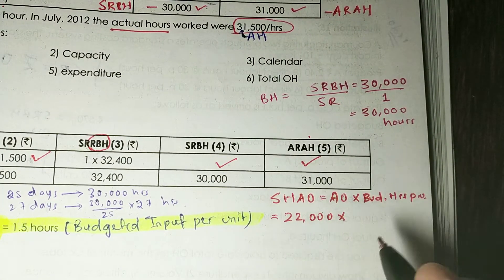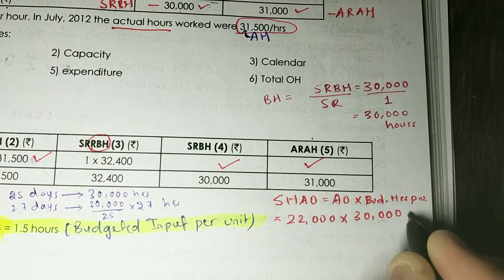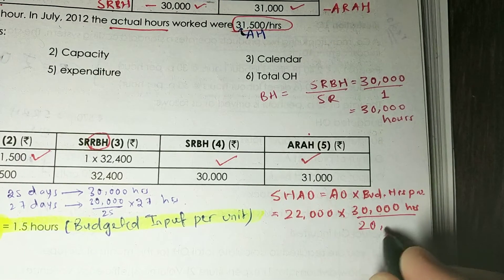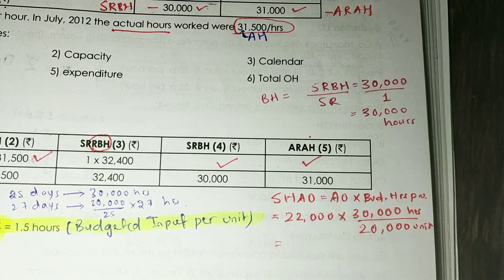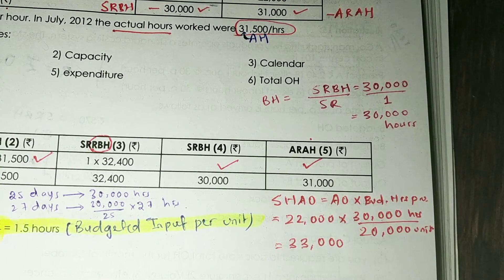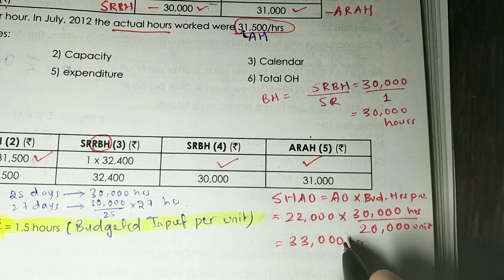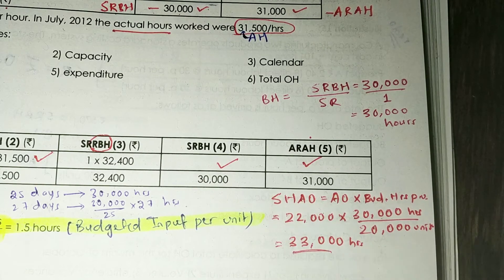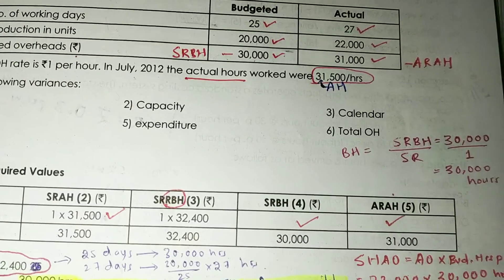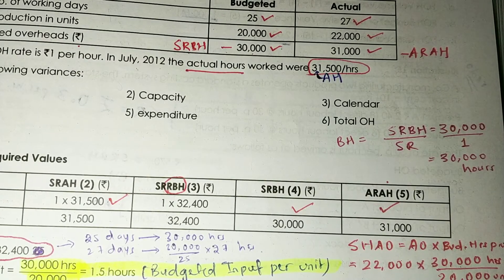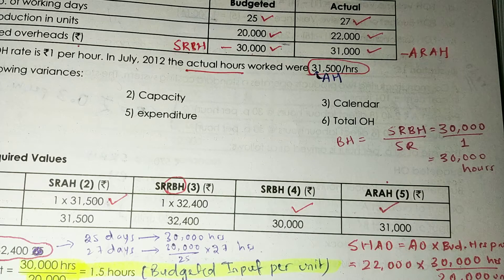There are total 30,000 budgeted hours and in those 30,000 hours you are producing 20,000 units. So you can easily calculate SHAO = 22,000 × (30,000/20,000) = 33,000 hours. This is the time required to produce your actual output. Now you can calculate SR × SH = 1 × 33,000 = 33,000.